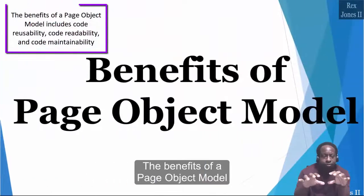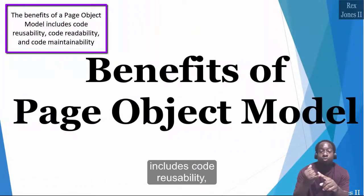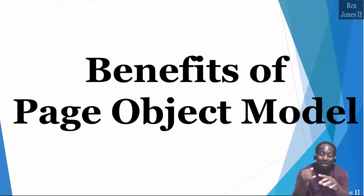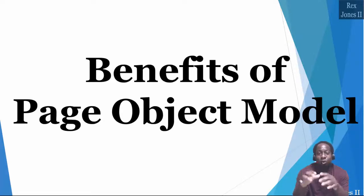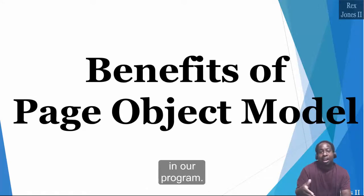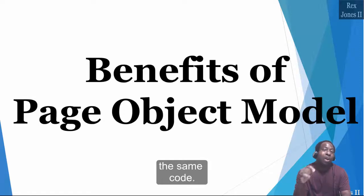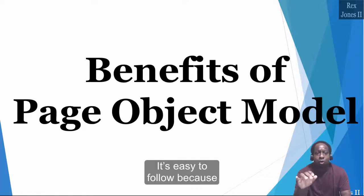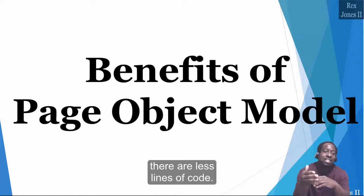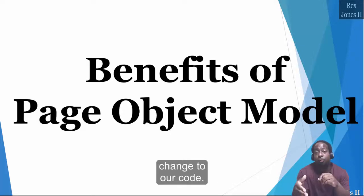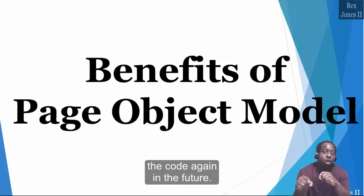The benefits of a page object model include code reusability, code readability, and code maintainability. Code reusability is when we reuse code in multiple locations in our program, which prevents us from rewriting the same code. Code readability means the code is easy to follow because the names are descriptive and there are fewer lines of code. Code maintainability means it will take less time to make a change to our code, and we can expect to revisit the code again in the future.